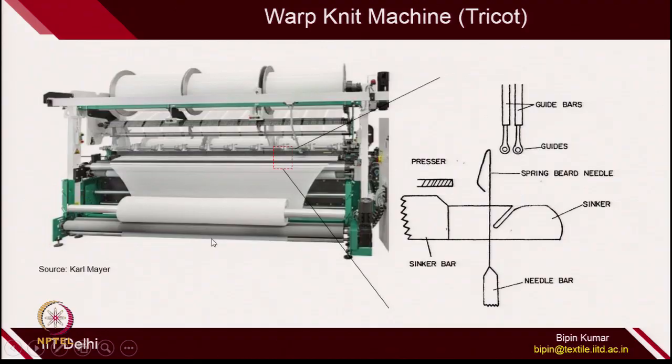You can even create lace patterns using warp knit structures. In the main knitting zone where loops are formed, there are 3 basic elements: needle, sinker, and guide. If you take out the knitting zone, you will find these 3 types of elements — first one is needle, second one is sinker, and the third one is guides. These 3 — guide, needle and sinker — operate in a perfectly synchronized manner to make the loops.